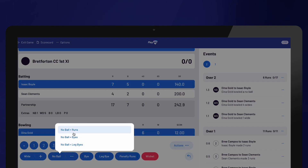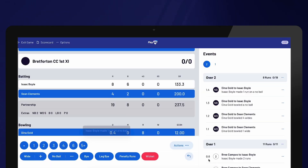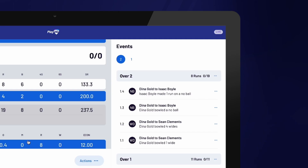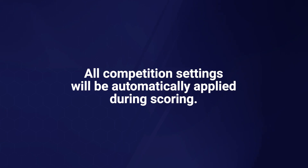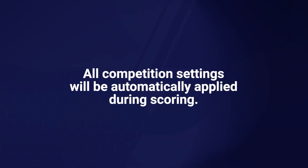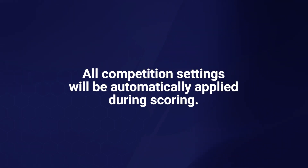All wide and no ball values are automatically added in addition to the runs, byes, or leg byes. Pay attention to the umpire signals after the delivery to ensure you've selected the correct option. You can confirm your selection by checking the description of that delivery in the Events column. If the association has specified whether no balls and wides should be re-bowled or count as a ball faced in the competition settings, those settings will be automatically applied during scoring — as the scorer, you don't need to make any changes. PlayHQ eScore will adhere to the pre-determined rules set by the association.